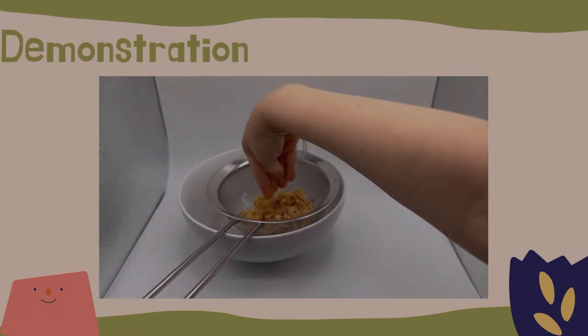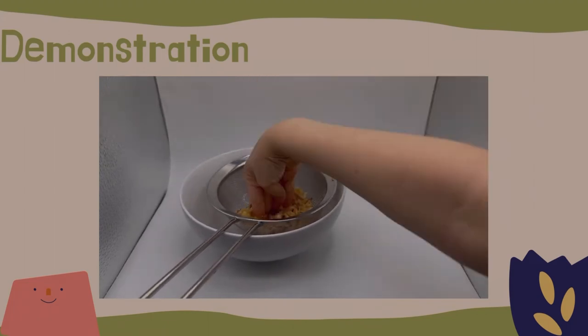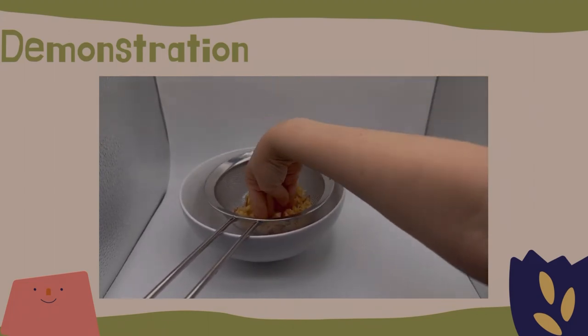Once we have the pieces ground up, we can squeeze those to get as much juice out as we can. You can also use a juicer if you have one.